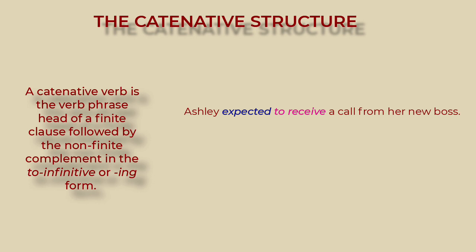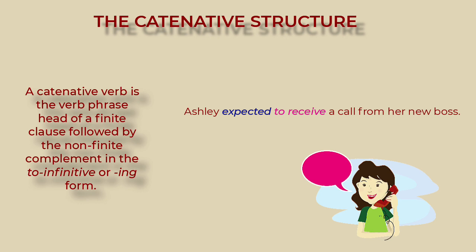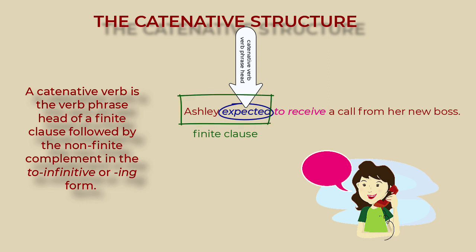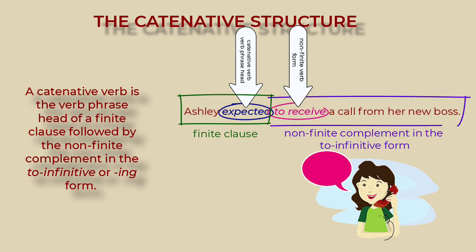Ashley expected to receive a call from her new boss. In this sentence, 'expected,' the catenative verb, is the verb phrase head of the finite clause 'Ashley expected.' 'To receive a call from her new boss' is the non-finite complement in the to-infinitive form. The second verb, 'to receive,' is the direct object of the catenative verb.